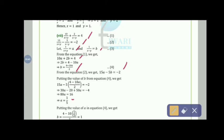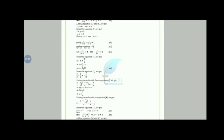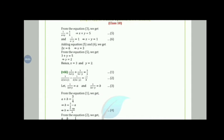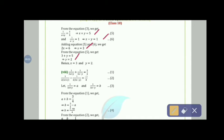Solving gives a = 1/5. Putting a = 1/5 into equation 4: b = (4 − 10(1/5))/2 = 1. From 1/(x+y) = 1/5 we get x + y = 5, and from 1/(x−y) = 1 we get x − y = 1. Adding: 2x = 6, so x = 3. Substituting back gives y = 2. Therefore x = 3 and y = 2.